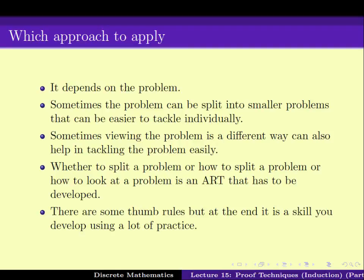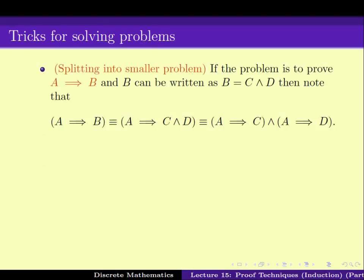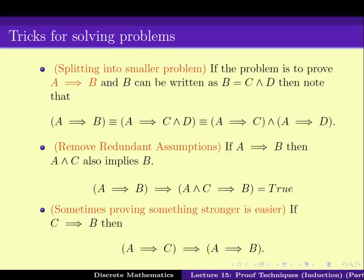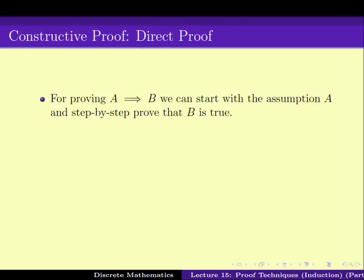To quickly recap what we have done till now: we have solved some tricks of how to split the problem into smaller problems, depending on whether B can be written as C and D; how to remove redundant assumptions; and thirdly, how to see that sometimes proving something harder or stronger can be easier. We also saw the direct proof technique where one works with A and ends up proving B.